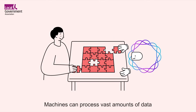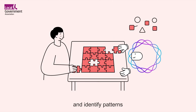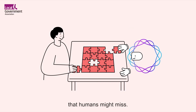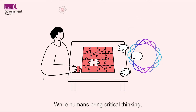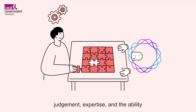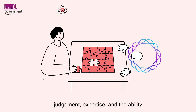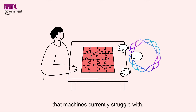Machines can process vast amounts of data and identify patterns that humans might miss, while humans bring critical thinking, judgment, expertise and the ability to handle complex situations that machines currently struggle with.